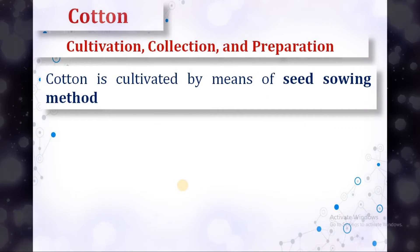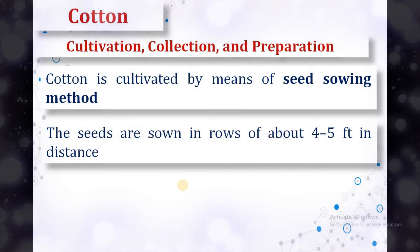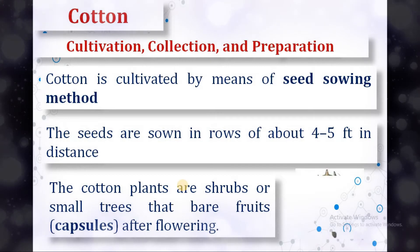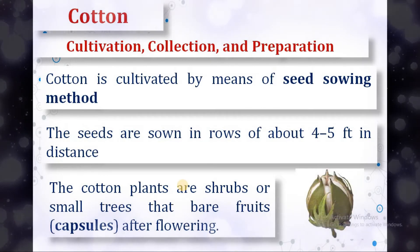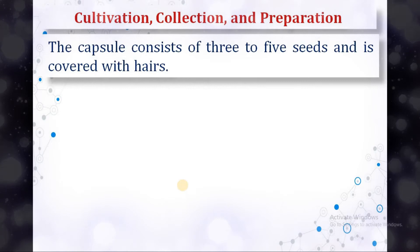Cotton is cultivated by means of seed sowing. The seeds are sown in rows about 4 to 5 feet apart. The cotton plants are shrubs or small trees that bear fruits after flowering. After flowering, the cotton plant bears a fruit called a capsule, in which the seeds are present. The capsule consists of 3 to 5 seeds and is covered with hairs.